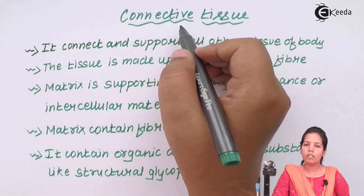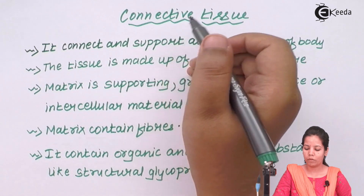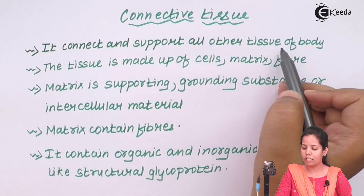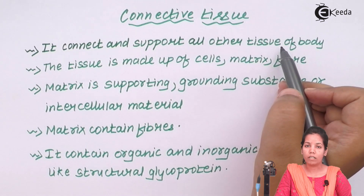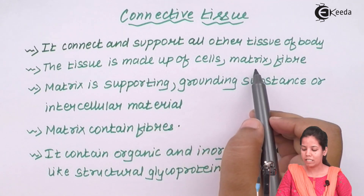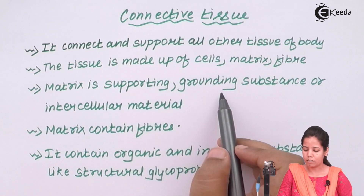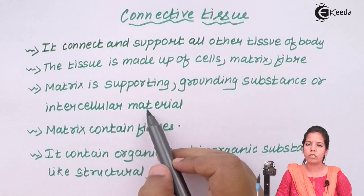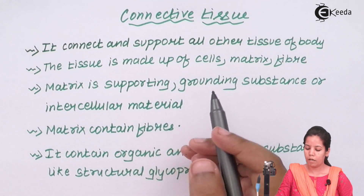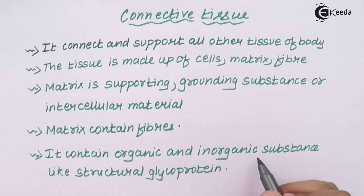Connective tissue is the tissue that connects different organs or different other tissues and helps them to adhere or stay together. It basically connects and supports all other tissues of the body, whether it is your epithelium, nervous, or muscular tissue. This tissue is made up of cells, matrix, and fiber-type substances. Matrix is a supportive or grounding substance — an intracellular material present in the free spaces beside or beneath the cells. Matrix consists of fiber-like substances and contains organic as well as inorganic substances like structural glycoproteins.